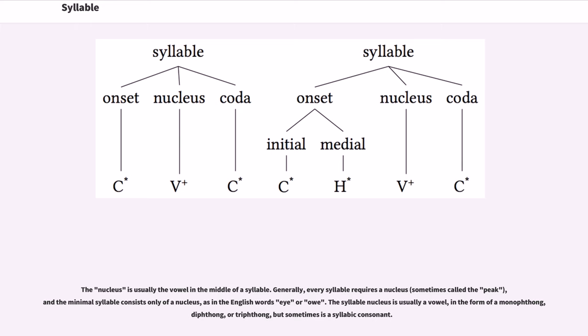The nucleus is usually the vowel in the middle of a syllable. Generally, every syllable requires a nucleus, and the minimal syllable consists only of a nucleus, as in the English word uh or oh. The syllable nucleus is usually a vowel, in the form of a monophthong, diphthong, or triphthong, but sometimes is a syllabic consonant.